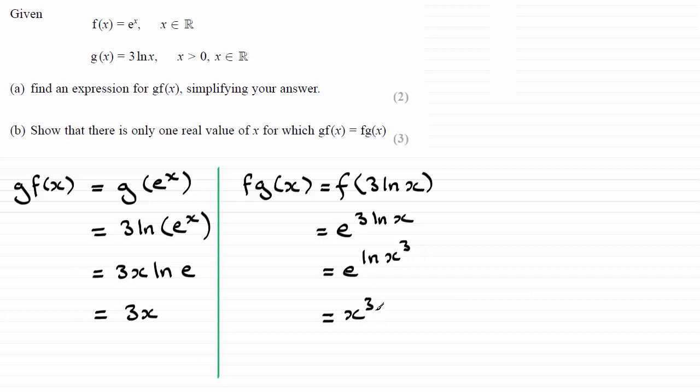OK? So we've now got gf of x and fg of x and so we can equate them. So if we put that down we've got that 3x must be equal to x cubed. So it's just a question of solving this equation.